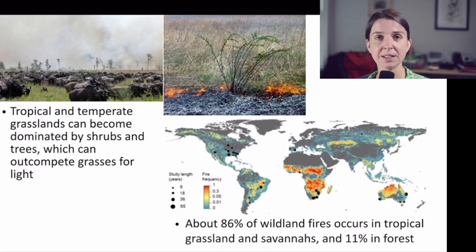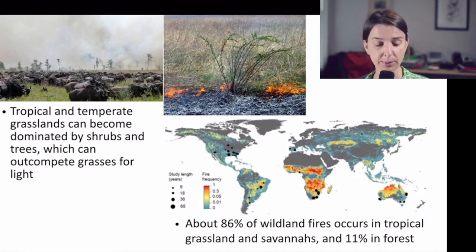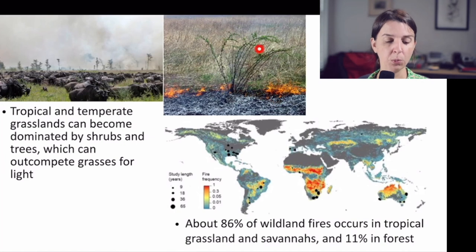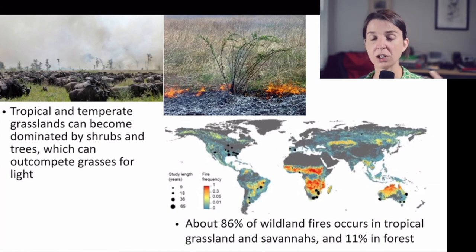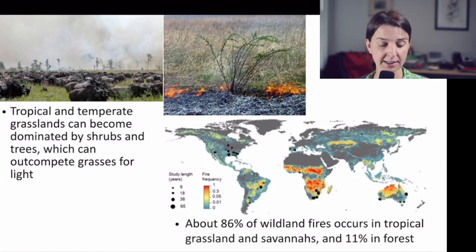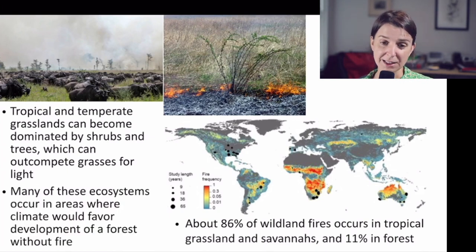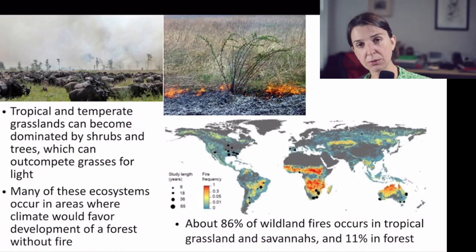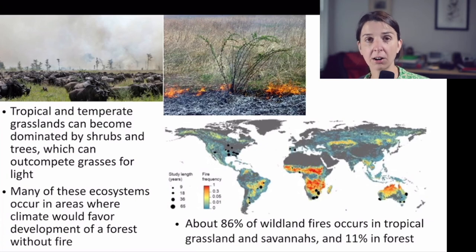In both tropical and temperate grasslands, fire is very common and important for their maintenance. Without fire, these systems may start to become dominated by woody shrubs or trees — such as in this tropical savanna — which, once established, out-compete grasses for light because they are much taller. This is especially true in places where the climate would favor the development of a forest, such as in the grasslands and prairies in Arkansas.